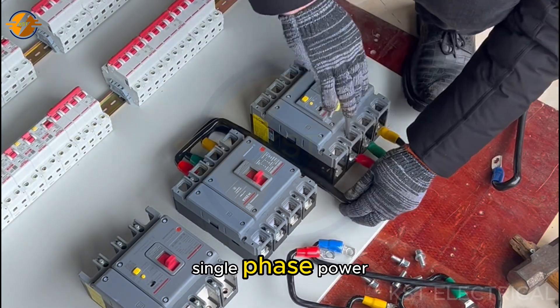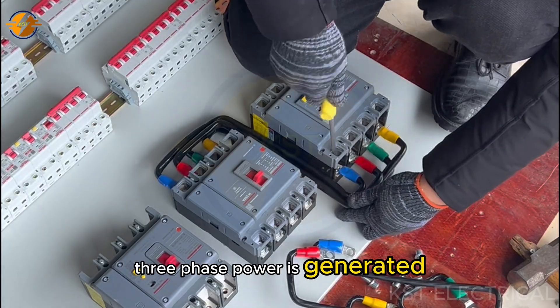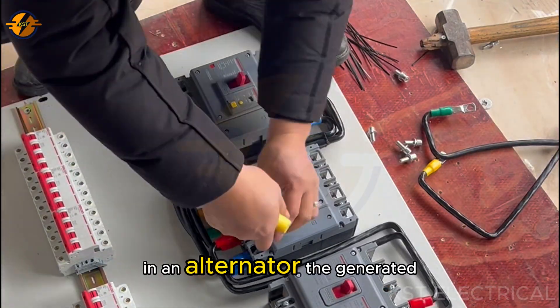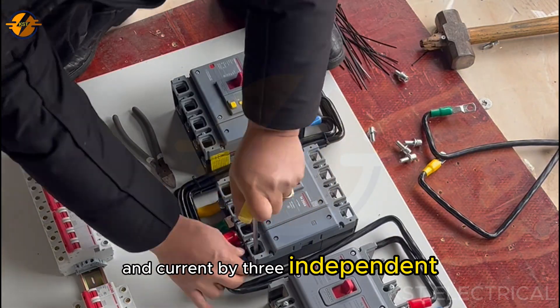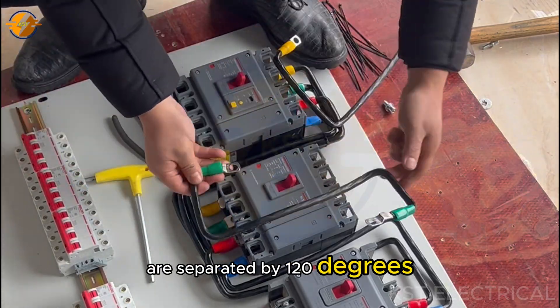What is three-phase and single-phase power? In power generation plants, three-phase power is generated by an electrical generator or alternator. In an alternator, the generated voltage and current by three independent coils in the stator are separated by 120 degrees from each other.